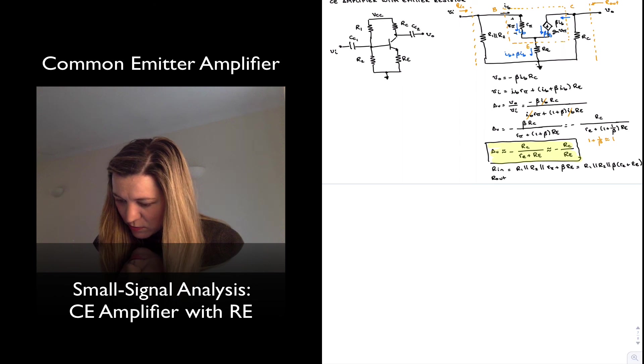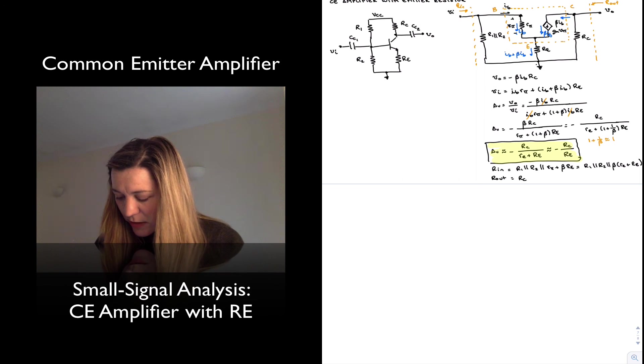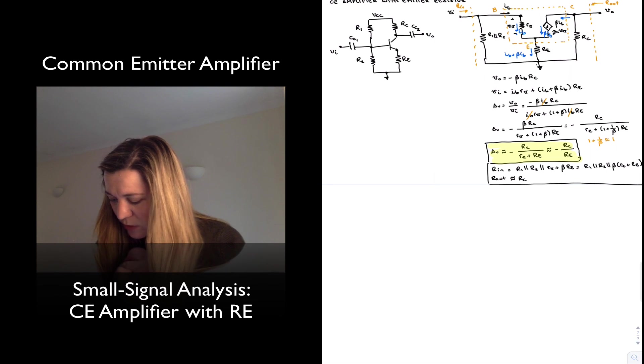And r_out will be equal to, and in this case will just be R_C, since we have ignored little r_out. I'm going to put approximately equal, and again those are similar expressions to what we found earlier.